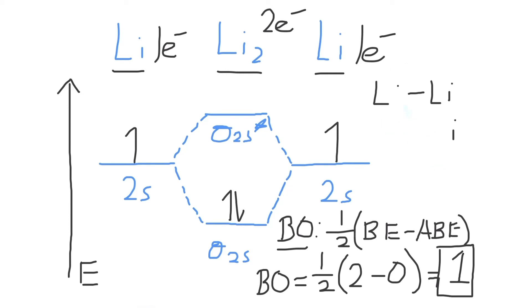Now, is Li2 paramagnetic or is it diamagnetic? Because the lithium molecule, or the Li2 molecule, only has paired electrons and no unpaired electrons, Li2 will exhibit diamagnetism and will be diamagnetic, which means that the molecule will be repelled by an external magnetic field.